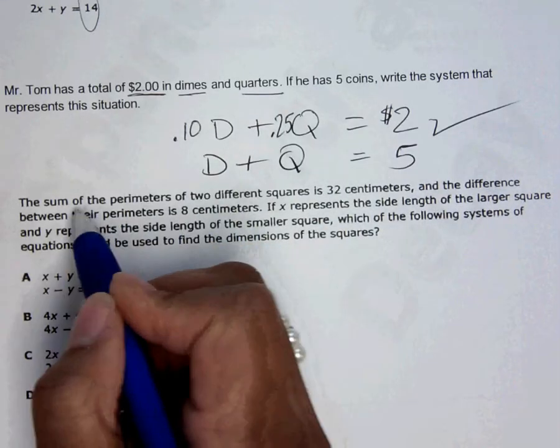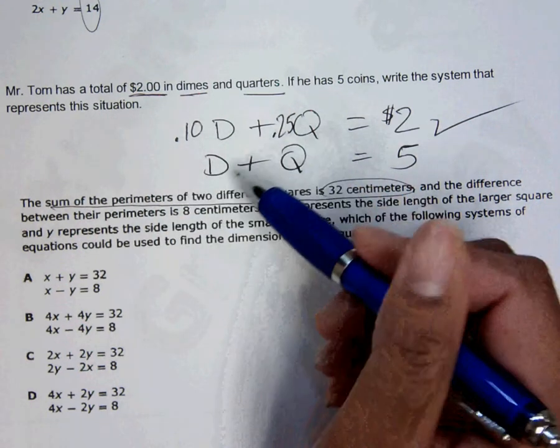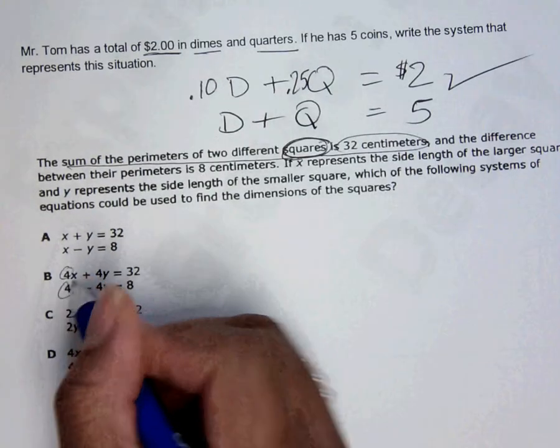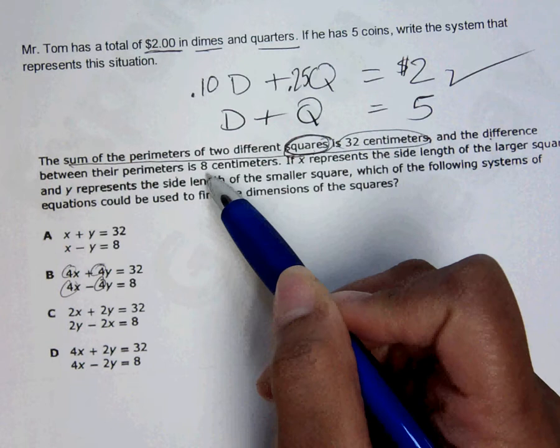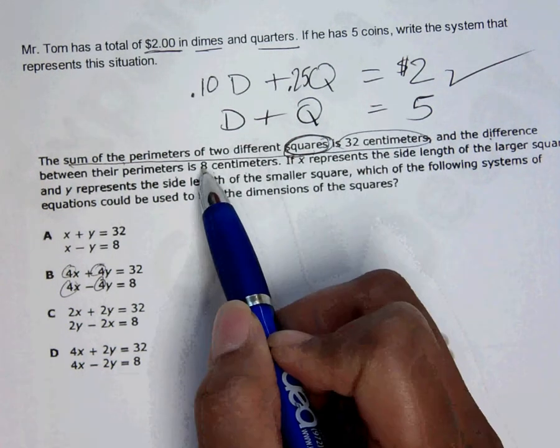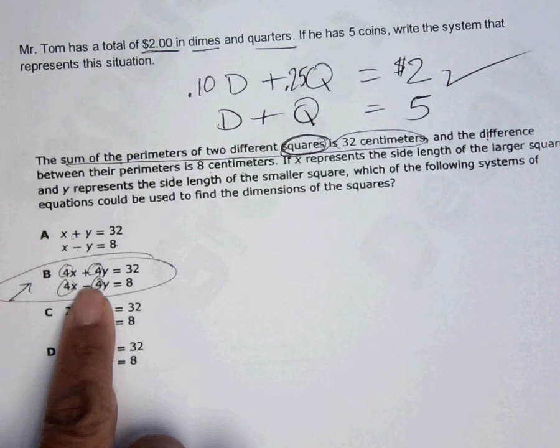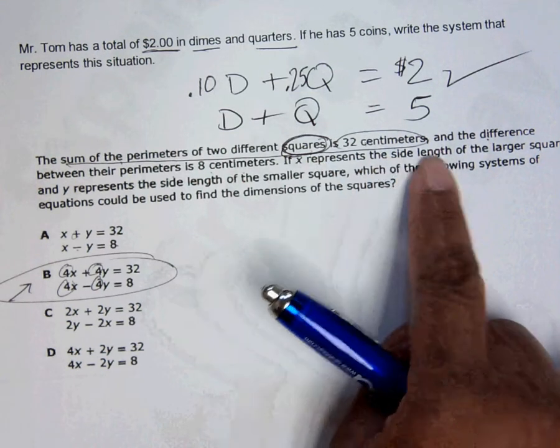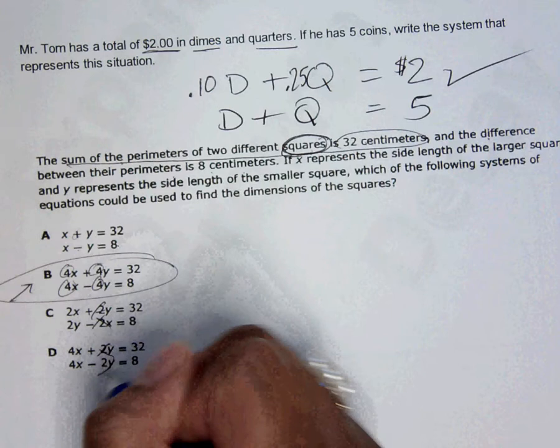This next one says that you have the sum of perimeters of 2 different squares is 32. So the sum of the perimeters, that means I need to add up the perimeters of 2 different squares. That's hidden information. There are 4 equal sides to squares. And then it's going to take the difference in the next one of their perimeters, and it says that it's going to be 8 centimeters. So the sum is 32, the difference is 8. All of them do that. But this is the only choice that gives you the sides as 4. And why is that important? If X represents the side length, you have to have a 4 on all of them. Not a 2 and a 4 for both the large and small.